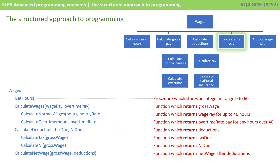Moving on to calculate net pay — that takes in two parameters: the gross wage and the deductions. Once it has taken both those figures and performed its calculation, it returns the net wage.